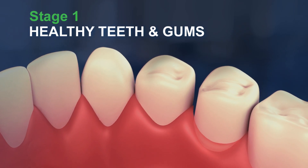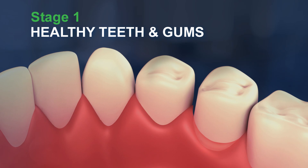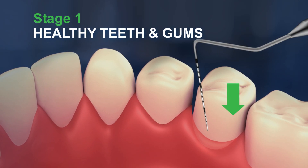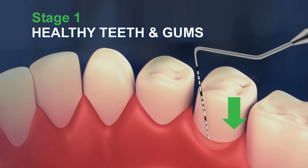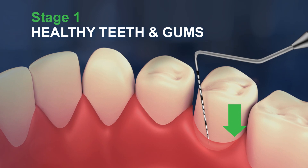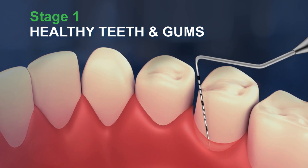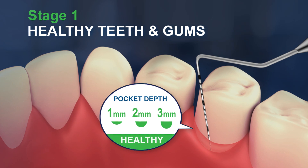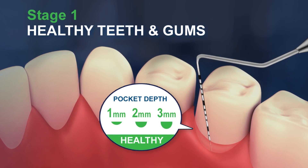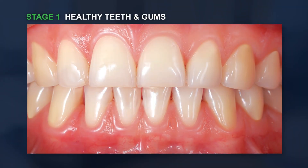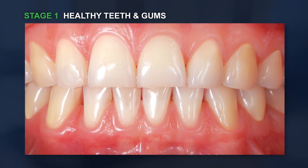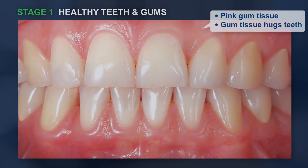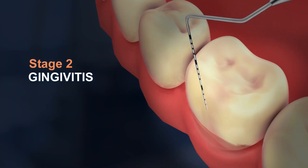The gum pocket depth is measured — the deeper the measurement, the more severe the infection. Healthy teeth and gums are indicated by a pocket depth of 1 to 3 millimeters with no bleeding or sensitivity. Healthy gums will appear pink in color and gum tissue closely hugs the teeth.